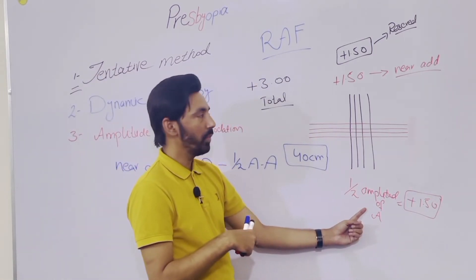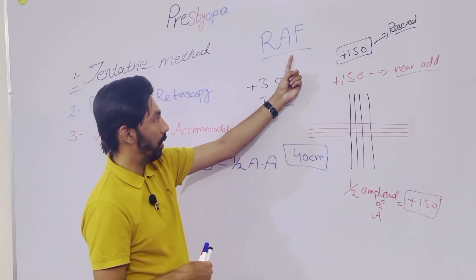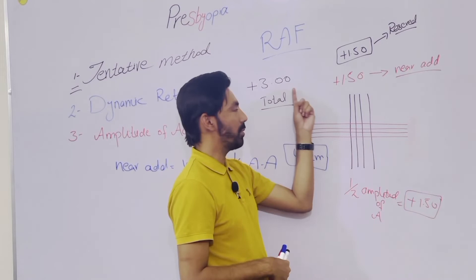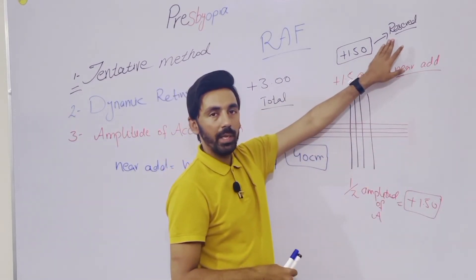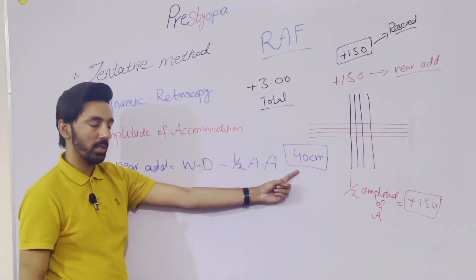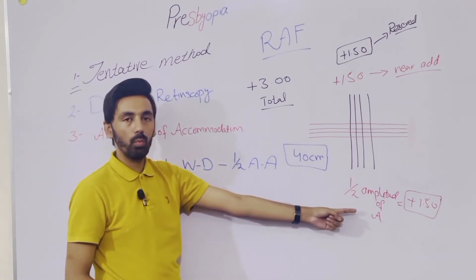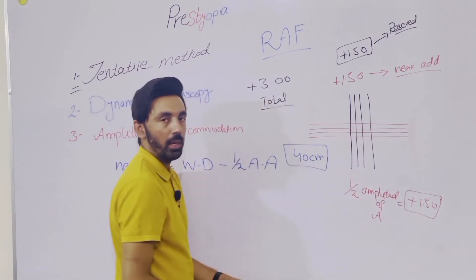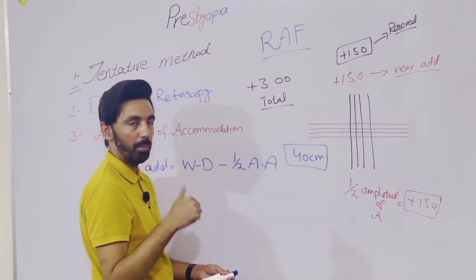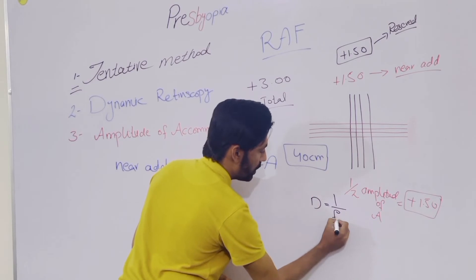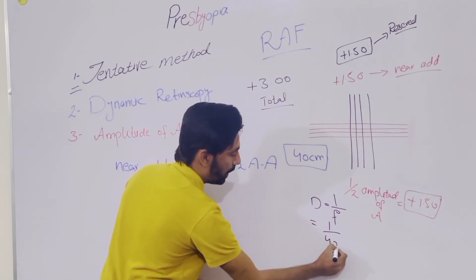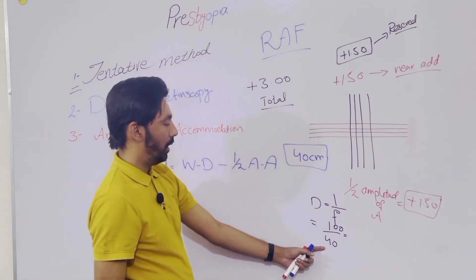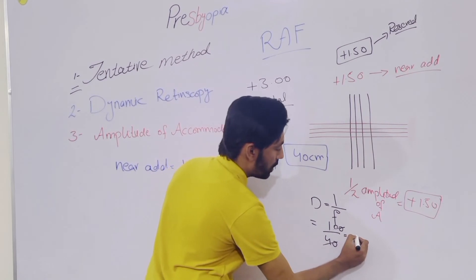We have our working distance of 40 centimeters and our amplitude of accommodation from the RAF Rule is plus 3, so half is plus 1.5. The working distance is in centimeters and the amplitude is in dioptric form, so we must convert. The formula is D = 1/f. Since 40 is in centimeters, we calculate 100 over 40, which gives us 2.5 diopters.